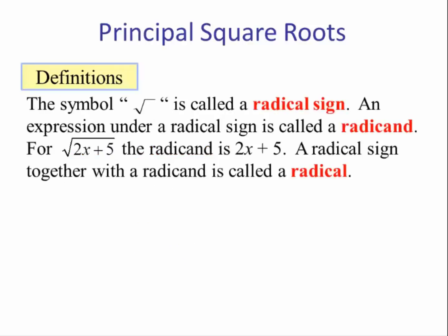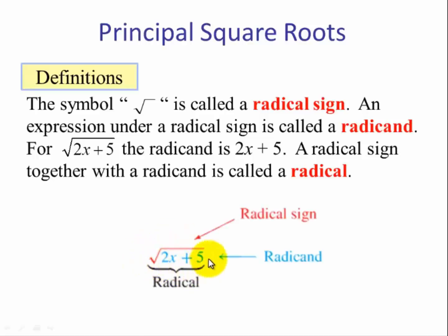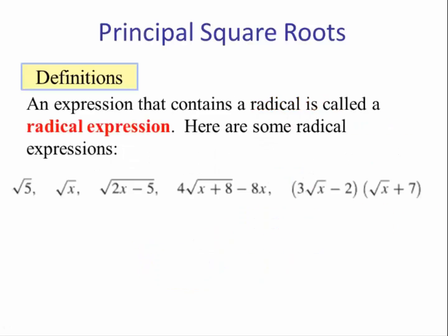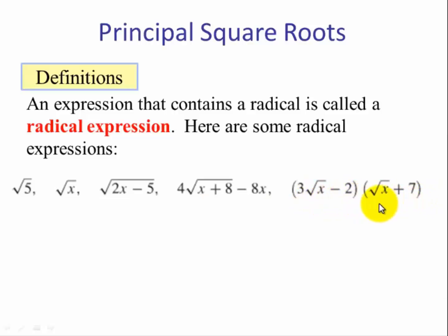Definitions. The symbol we use for square root is called a radical sign. An expression under a radical sign is called a radicand. For the square root of 2x plus 5, the radicand is 2x plus 5. A radical sign together with a radicand is called a radical. So these two together make what's called a radical. An expression that contains a radical is called a radical expression. Here are some radical expressions: the square root of 5, the square root of x, the square root of 2x minus 5, 4 times the square root of x plus 8 minus 8x, and 3 times the square root of x minus 2, all multiplied by the quantity square root of x plus 7.